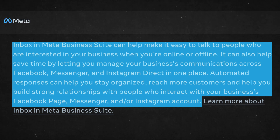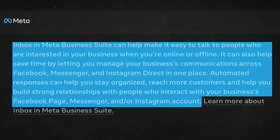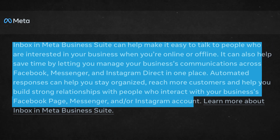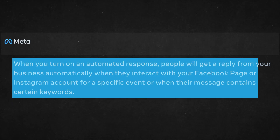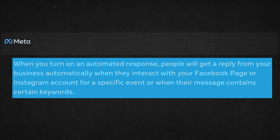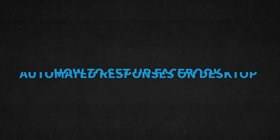Automated responses can help you stay organized, reach more customers, and help you build strong relationships with people who interact with your business's Facebook page, Messenger, and/or Instagram account. When you turn on an automated response, people will get a reply from your business automatically when they interact with your Facebook page or Instagram account for a specific event, or when their message contains certain keywords.